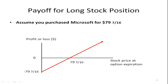Let's take a look at the payoff pictures here. The payoff for a long position in the stock looks like this. You bought the stock in this example at 79 and 7/16ths. If the price falls to zero, you lose 79 and 7/16ths. There's no limit to how high the price can go — that's why the arrow is pointing up. For every dollar it goes above 79 and 7/16ths you make a dollar, and for every dollar it goes below, you lose a dollar.